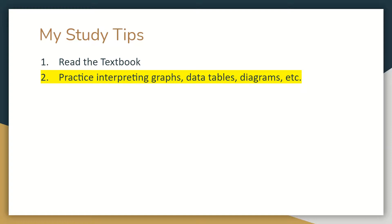Number two, and this is a close number one: you've got to practice interpreting graphs, data tables, and diagrams. If you can interpret graphs, data tables, and diagrams and you don't know much about biology, you'll still do better than you think on the exam. A lot of the exam is just being able to interpret graphs, data tables, and diagrams. But if you really want to get a five, you've got to not only interpret them but also apply them to AP Biology concepts. If you have textbook knowledge and can interpret graphs, data tables, and diagrams, you're going to be very successful.